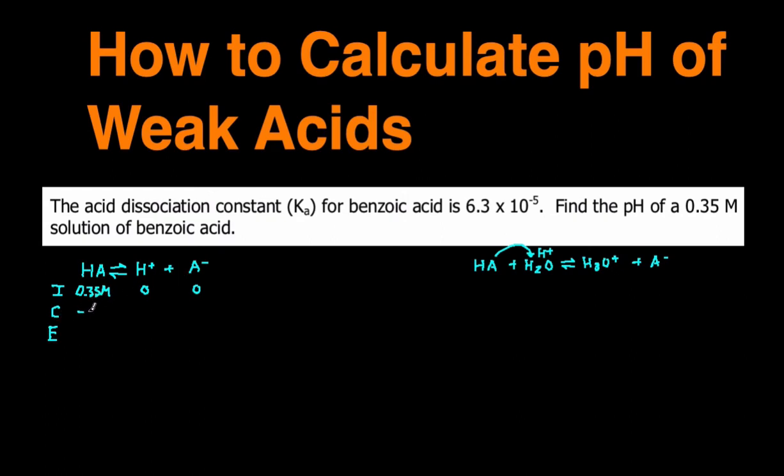Then for the C row, it's going to be minus X, and then the products are going to be plus X and plus X. Why is this minus X? It's because it's a reactant being used up, so it's minus, and these are products being produced, so that's why they're plus X and plus X. Then your E line is just the sum of the I and C line. So the E line for HA is 0.35 minus X, the E line for H plus is X, and the E line for A minus is also X.